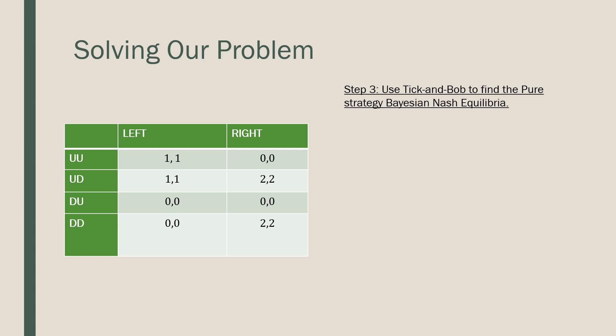So step number three is that we're going to use Tick and Bob to find out all of our pure strategy Nash Equilibria. So let's say our column player picks left over here. Our row player's best response would be UU and UD. These are equivalent responses, two equally valid results here. And likewise, if right was picked, we would have our player picking UD or DD. Again, these are also two equally valid best responses.